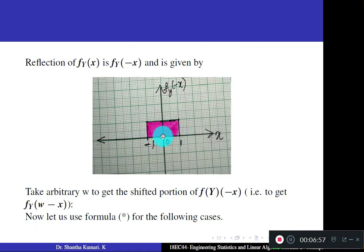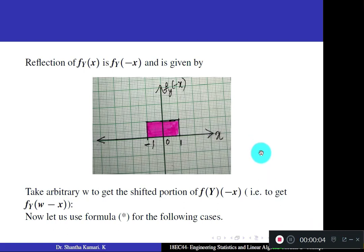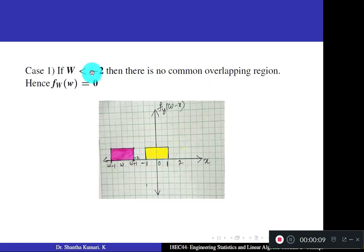Now shift the reflected curve by w units. Take some arbitrary value for w to get the shifted portion of fy(−x), which gives fy(w−x). The midpoint of the shifted curve is w, so the right border is w+1 and the left border is w−1, maintaining a width of 2. Now use the convolution formula for different cases.